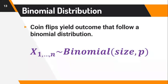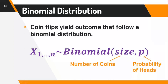Coin flips yield outcomes that follow a binomial distribution. The general notation is X subscript 1 to N for the number of draws. The binomial distribution is described by two parameters: size, representing the number of coins you flip, and P, representing the probability that it will come up heads.